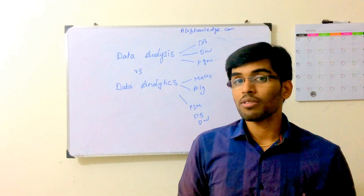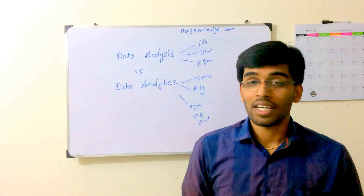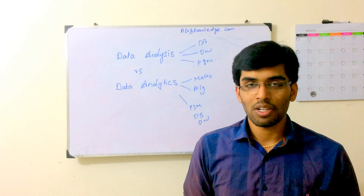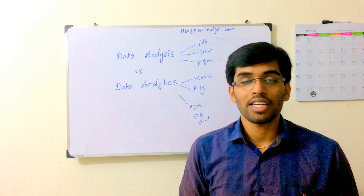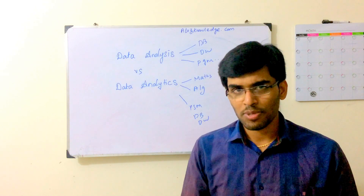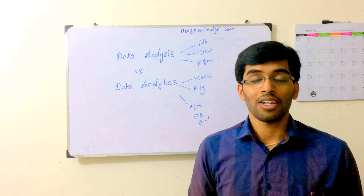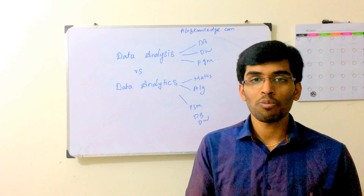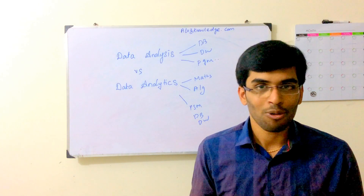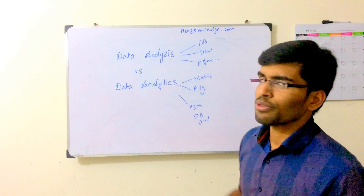For a data science role, the priority is: mathematics first, then algorithms, then programming language. If a company has a data science role but the people are focusing more on data warehouse and database, they are not being utilized as real data science resources. Real data scientists — people who work at Flipkart, Amazon, Google, Facebook, or product-based startups — will tell you their academic background is mathematics or statistics. Companies recruit data scientists from those backgrounds; engineering graduates can also qualify but must be very strong in mathematics and algorithms.